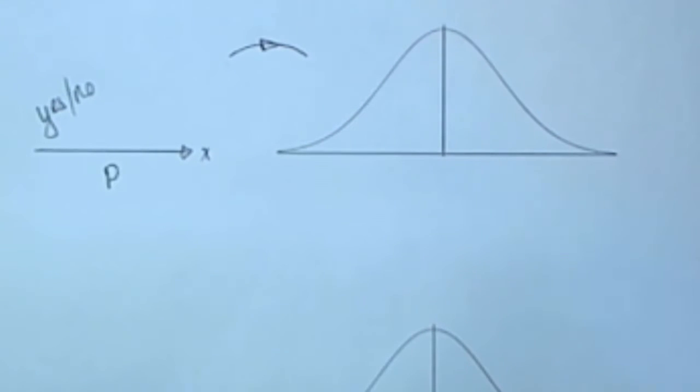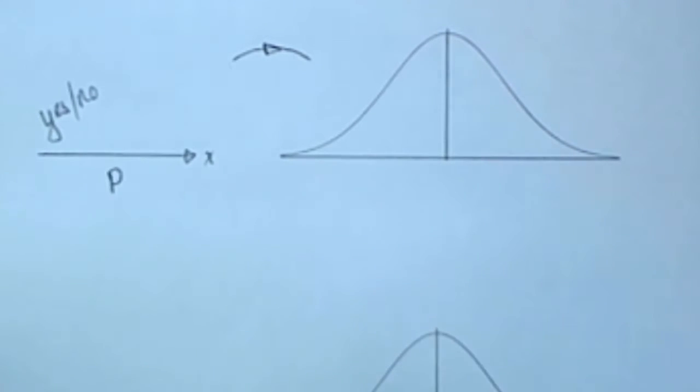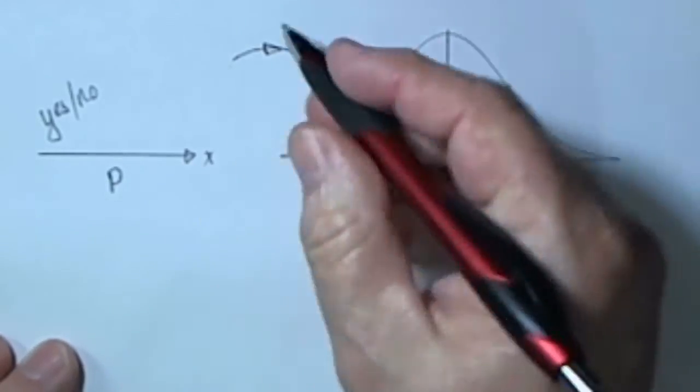So the population parameter is the proportion of the population that are yeses. To understand what that P is, we take a sample of size N.